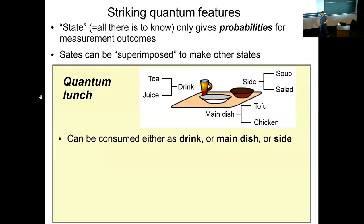Let me try and illustrate this with a completely made-up system I'm going to call quantum lunch. Imagine that the cafeteria in the center building began offering something called quantum lunch. It's a quantum system. There are three measurements that you can perform on it. It consists of a drink, a main dish, and a side. You can measure what's for drink, and it's either tea or juice. You can measure the main dish—it's either tofu or chicken. And then the side dish is soup or salad.